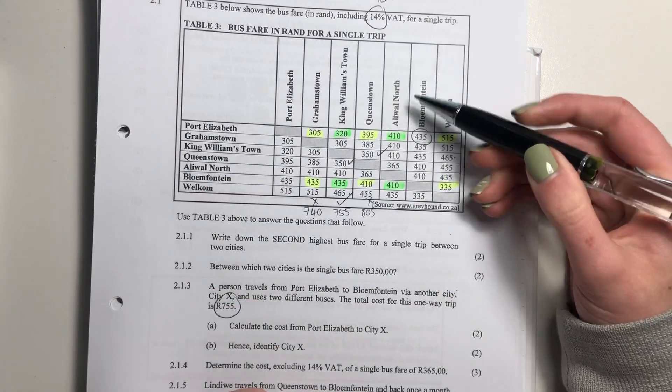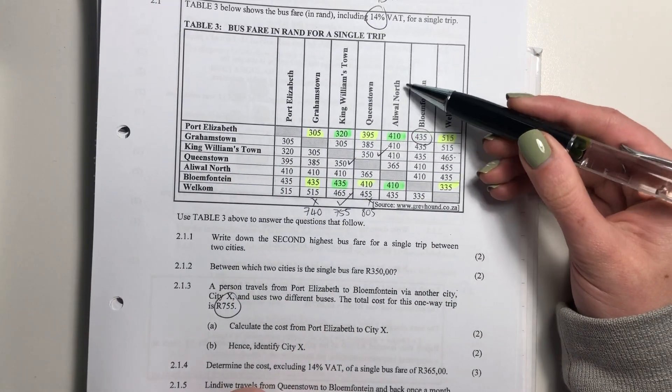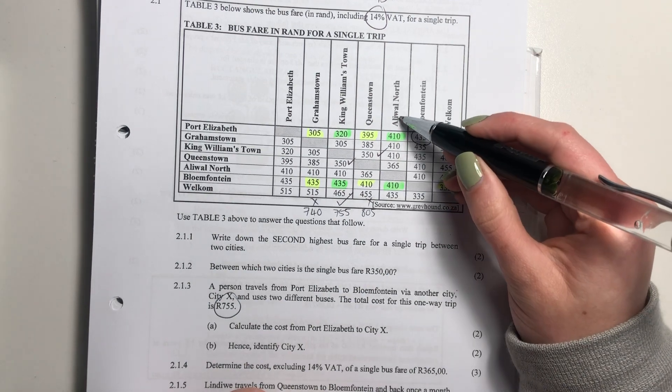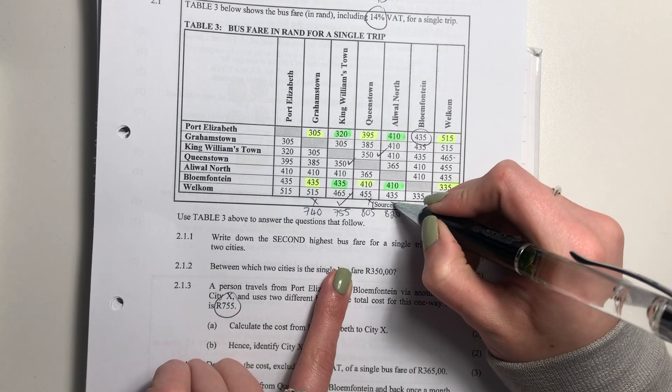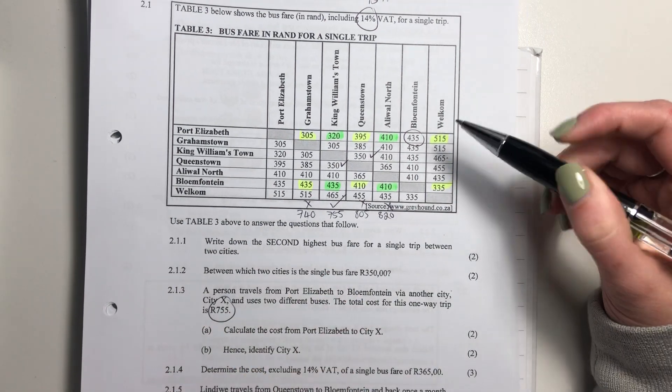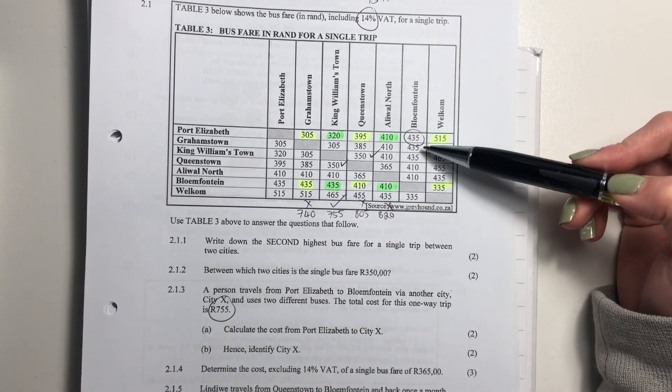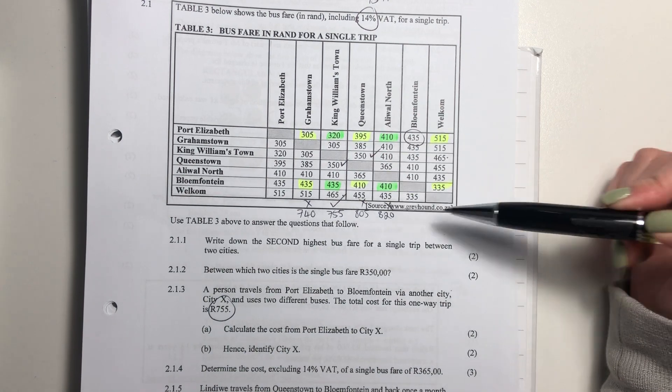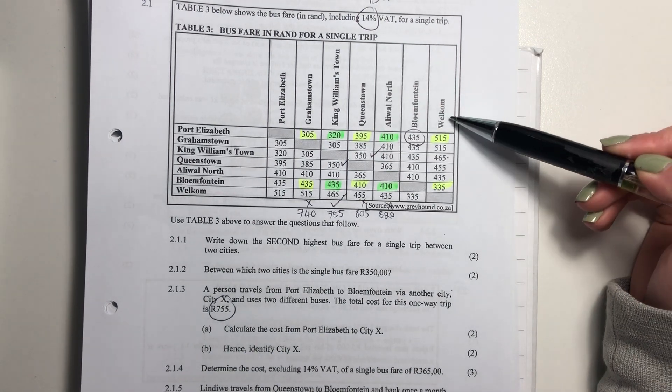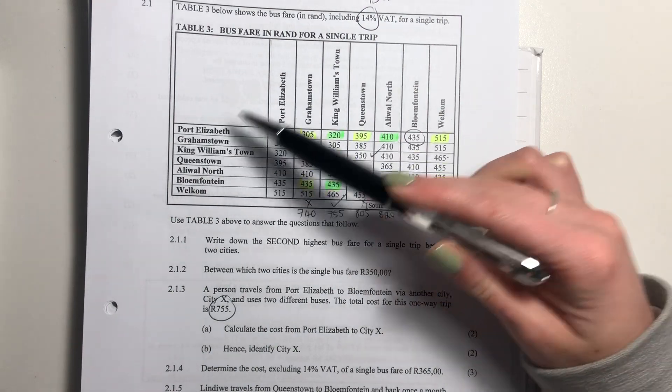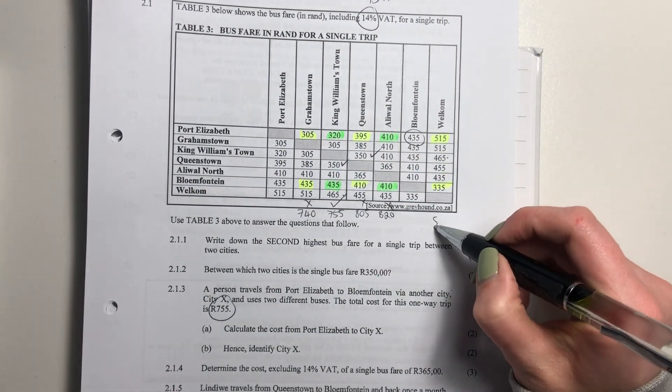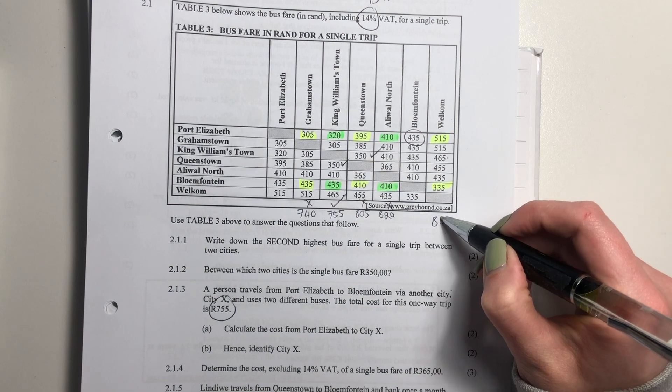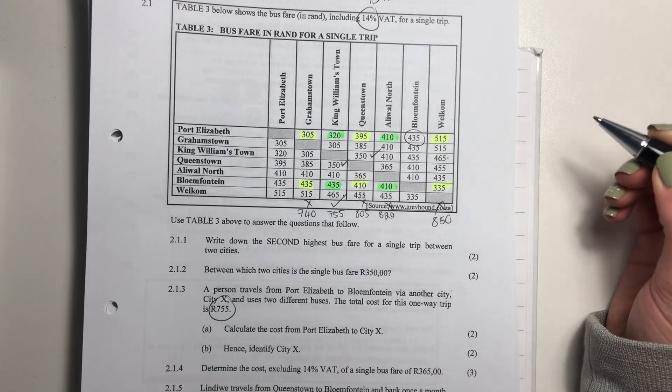This one from Aliwal North, right? And then go from Aliwal North to Bloemfontein. It would be 410 plus 410, which would be 820. So it's not that one. And then obviously we can't go from PE to Bloem because it's saying that we're not going directly. We're going by another city. Then we have Valcom. So it can go PE Valcom and then Valcom Bloem. And that is 850 rand. So it's not that.